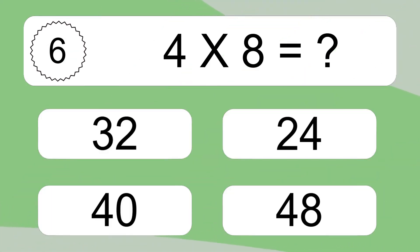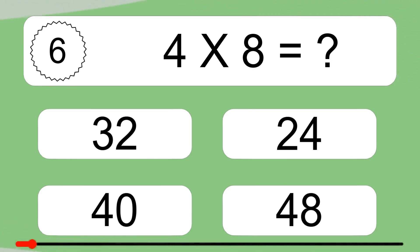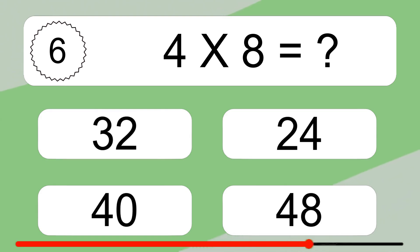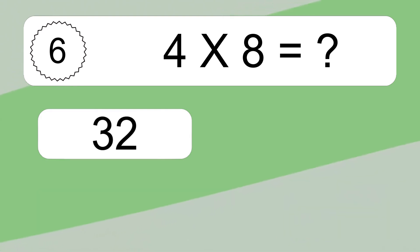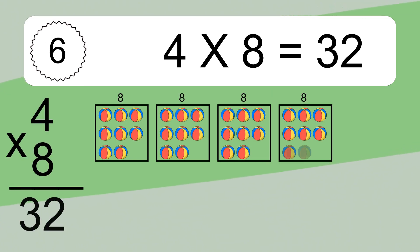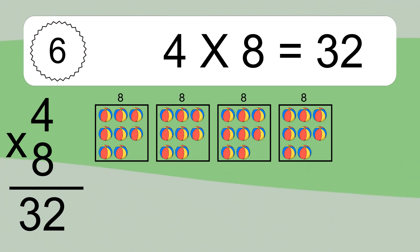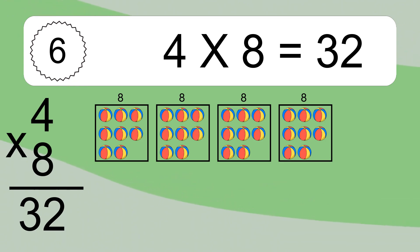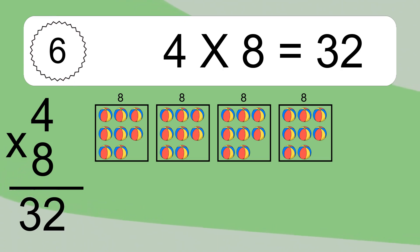We have 4 boxes, and each box has 8 colorful balls inside. If you count all the balls in all the boxes together, you will have 4 times 8 balls. This equals 32 balls.